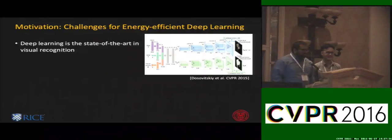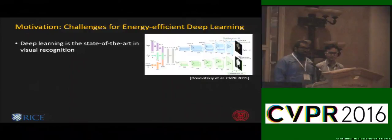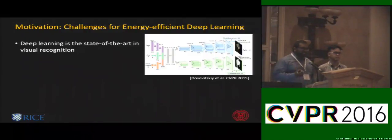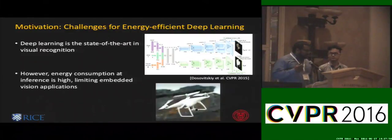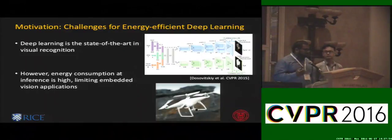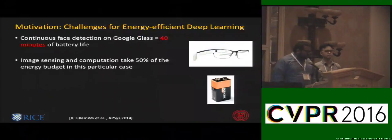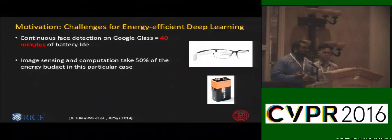The motivation of this work is really the rise of deep learning as the state-of-the-art algorithm for visual recognition. Convolutional neural networks are everywhere doing object detection, recognition, segmentation, and many visual recognition tasks. However, energy consumption at inference is high with these very large networks with millions of parameters, and this limits embedded vision applications such as smartphones, robotics, and autonomous vehicles. For example, continuous face detection on Google Glass would drain the battery in under 40 minutes.